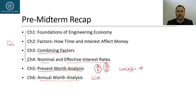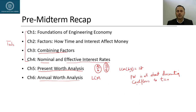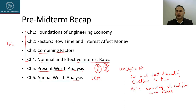In present worth analysis, if project A has six years of life and project B has nine years, we had to evaluate multiple life cycles to find the LCM — that process was very lengthy. Annual worth analysis is not concerned with LCM; we evaluate only one life cycle. Present worth is about discounting cash flows to t=0, while annual worth converts all cash flows into equal annual cash flows. That is the main difference and a huge advantage of annual worth analysis.